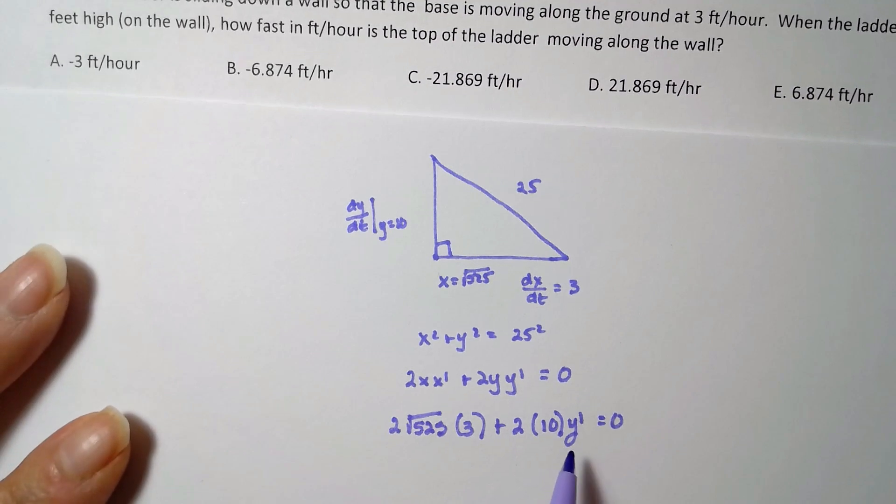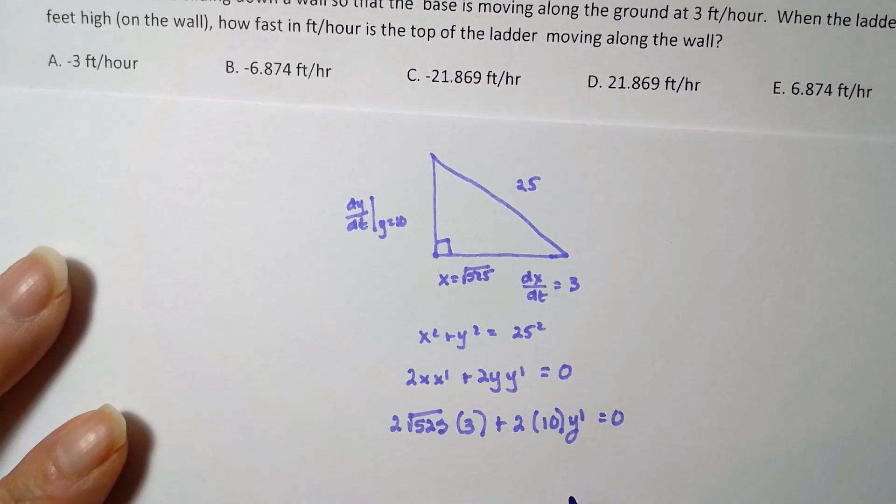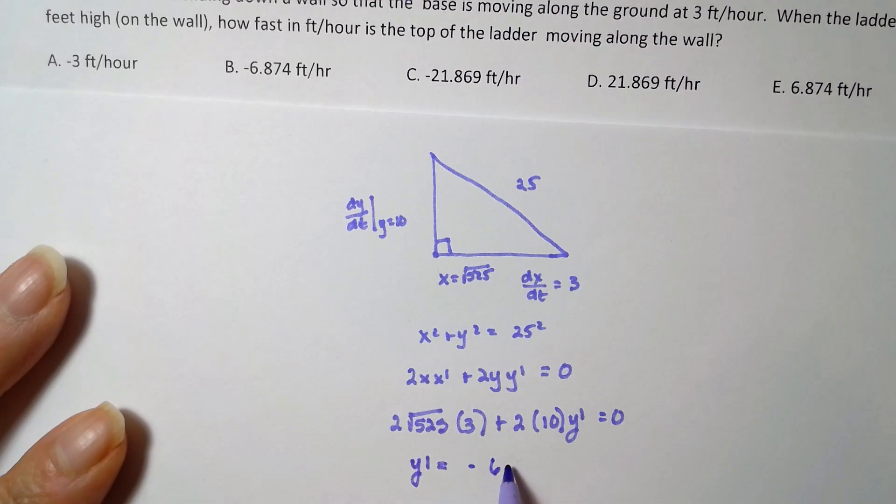So this is pretty ugly, and the idea is that we want to isolate y', right? So y' would equal negative 6 root 525, I'm writing with a purple pen, over 2 times 10 is 20. And if I compute that up...